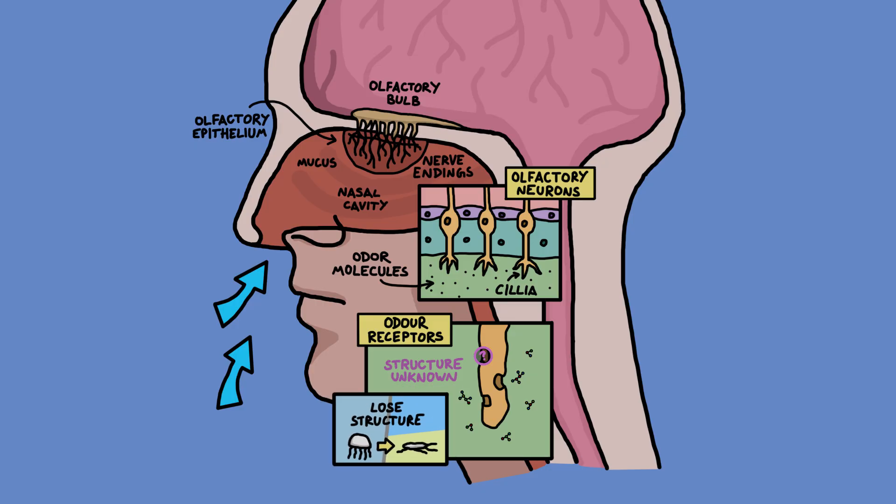It would be like taking a jellyfish out of the sea which just collapses into mush. We know that the sensation of smell is caused by odor molecules being caught by the receptor sites, which then causes those neurons to fire. But because we can't directly look at the receptors, we have to infer how they work from indirect evidence.